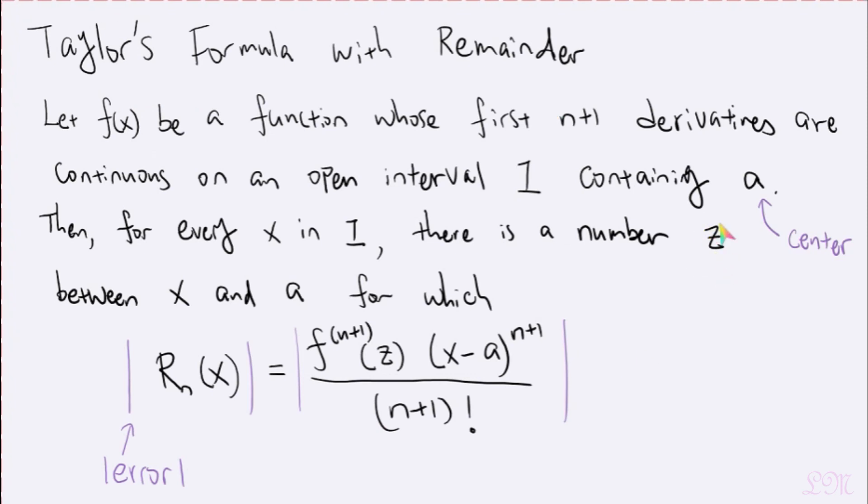Well, notice that this theorem only guarantees that there exists a z. So it guarantees that there is a z between x and a, but it does not really tell you what this z actually is. Now take a moment. Doesn't that sound familiar to you?